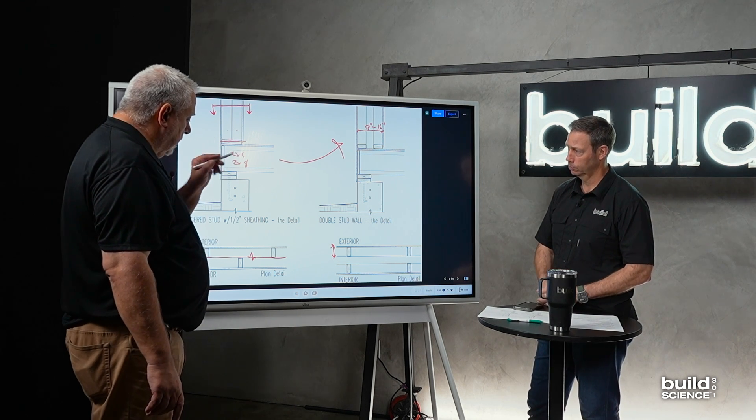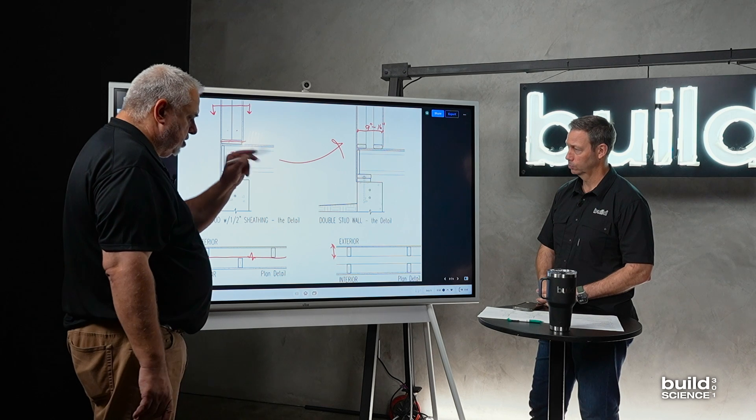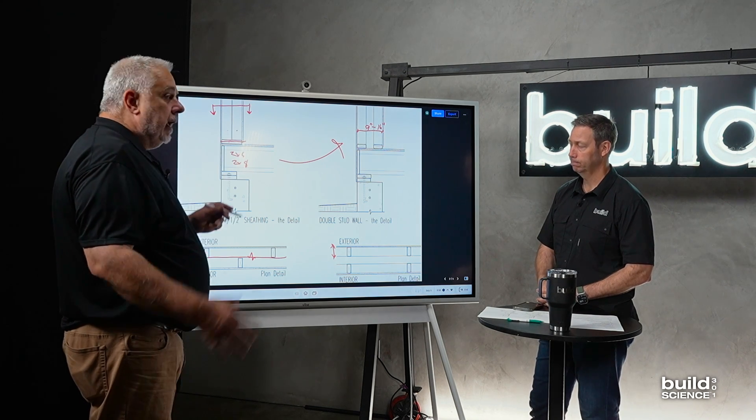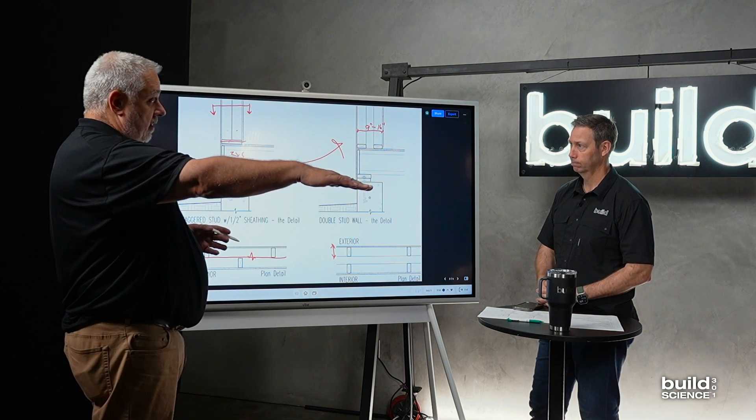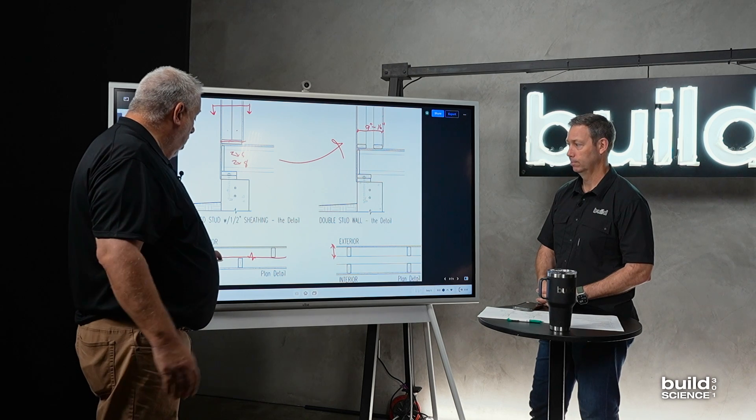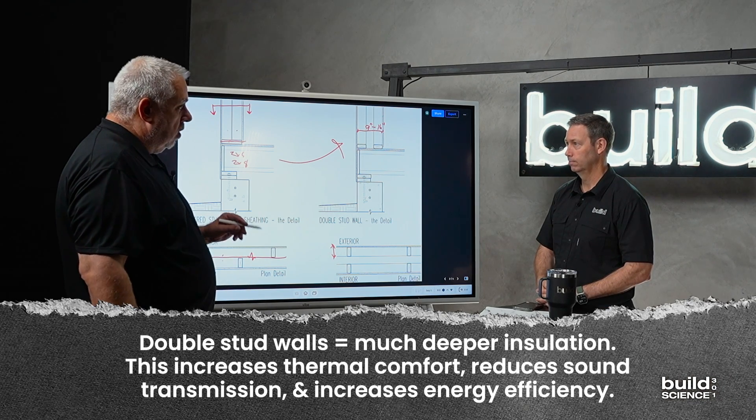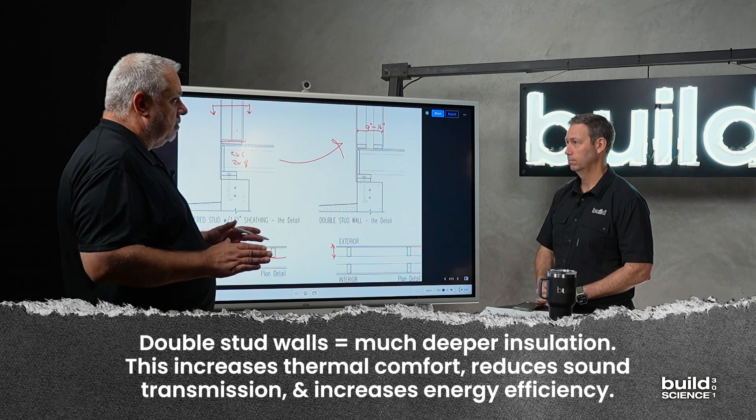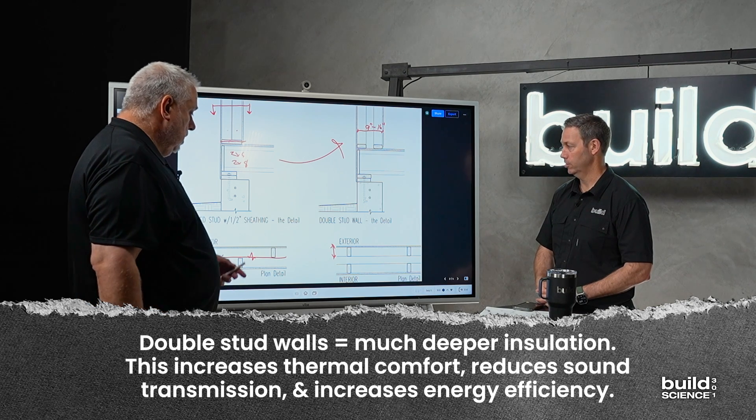And there are other places. I met with a builder—you probably know Shane out in California. He builds literally right under a flight line. And so all of his exterior walls are double wall because of the acoustical properties of that wall system.